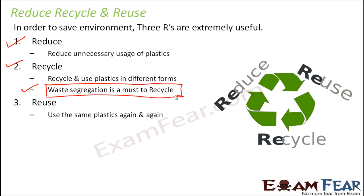The third principle is reuse — use the same plastics again and again. For example, if you went to the vegetable shop and they gave you a plastic bag, try to use that same plastic bag multiple times so you are not unnecessarily using other plastics. First, try to avoid using plastics as much as possible, because even though plastics make life very convenient, the more we use plastics the more we are damaging our environment.